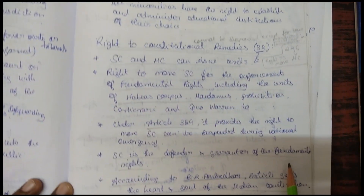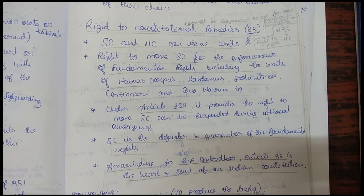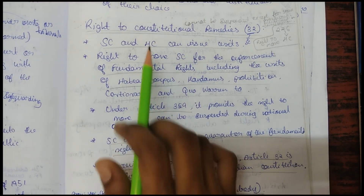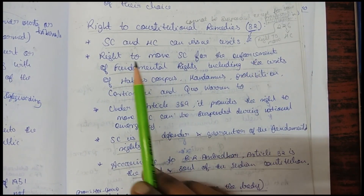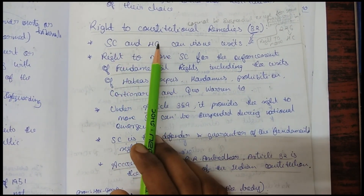Article 32 is another very important provision — the right to constitutional remedies. If a fundamental right is violated and you want justice, you can approach the court. The Supreme Court under Article 32 and the High Court under Article 226 can issue writs for the enforcement of fundamental rights.